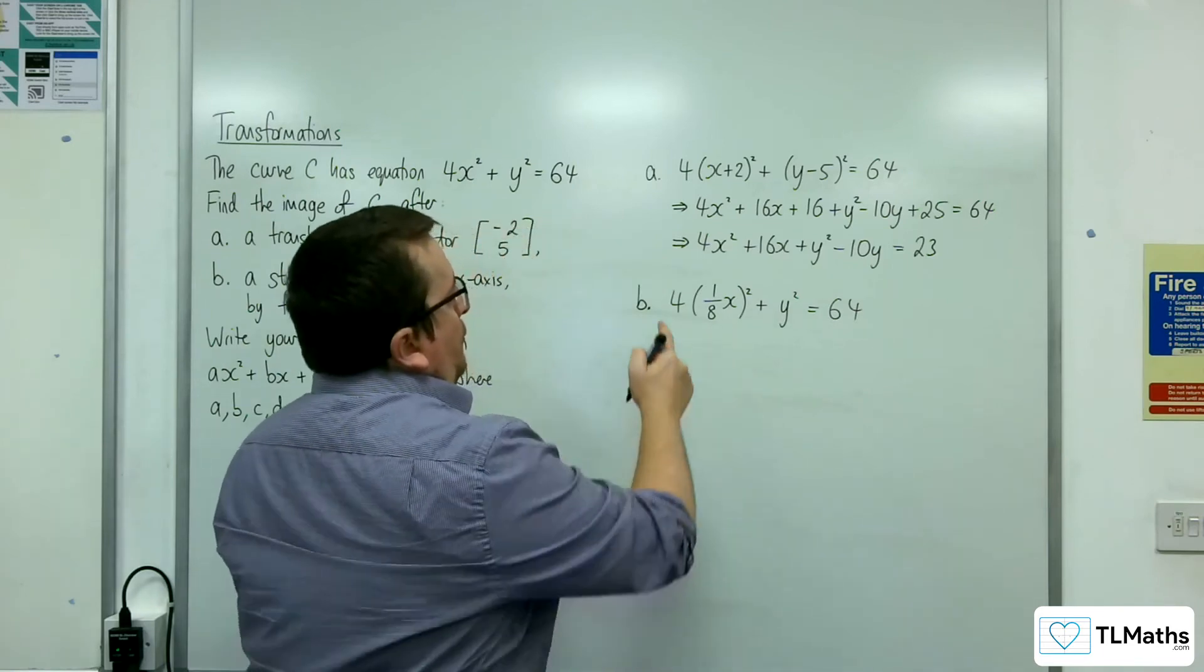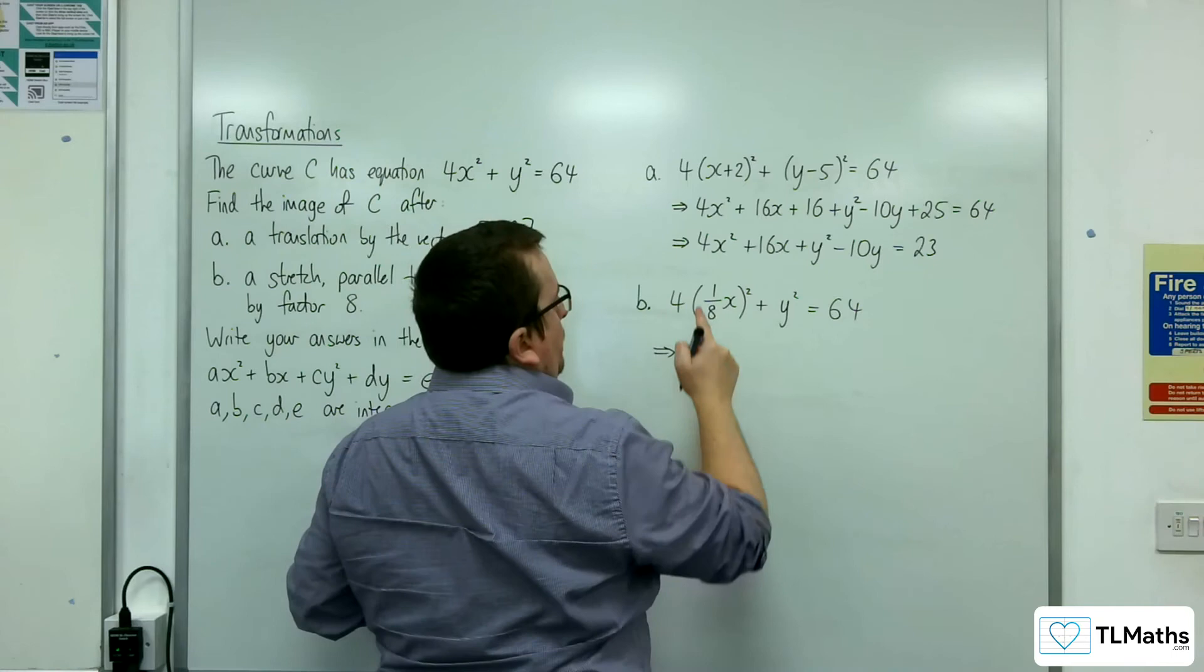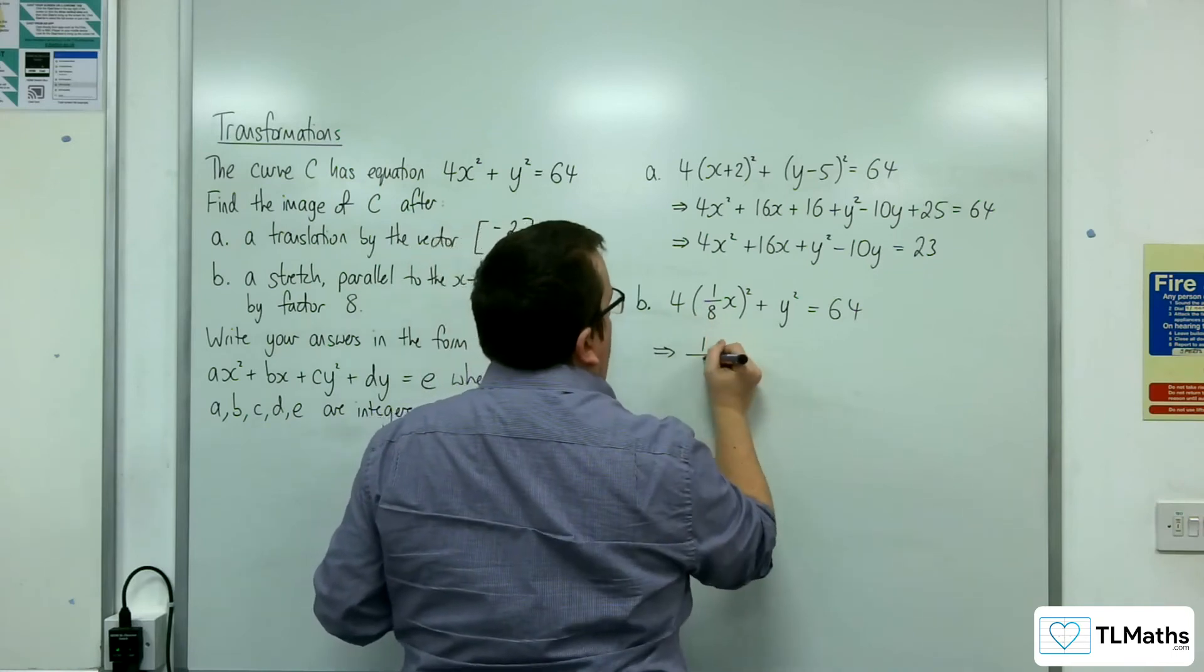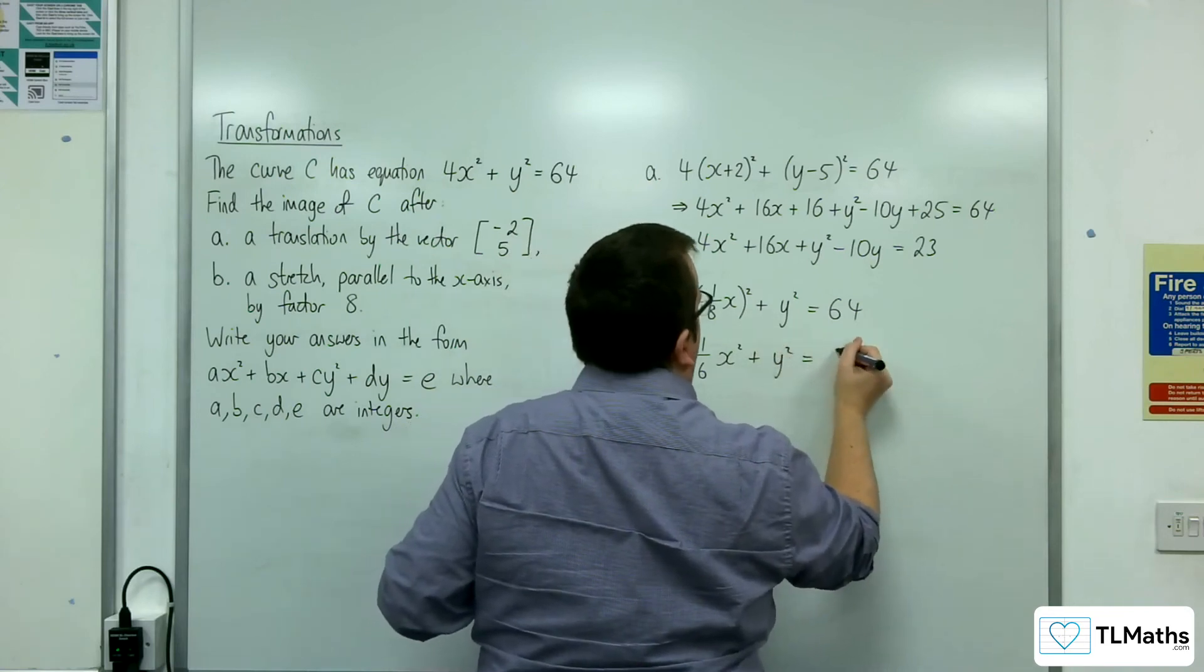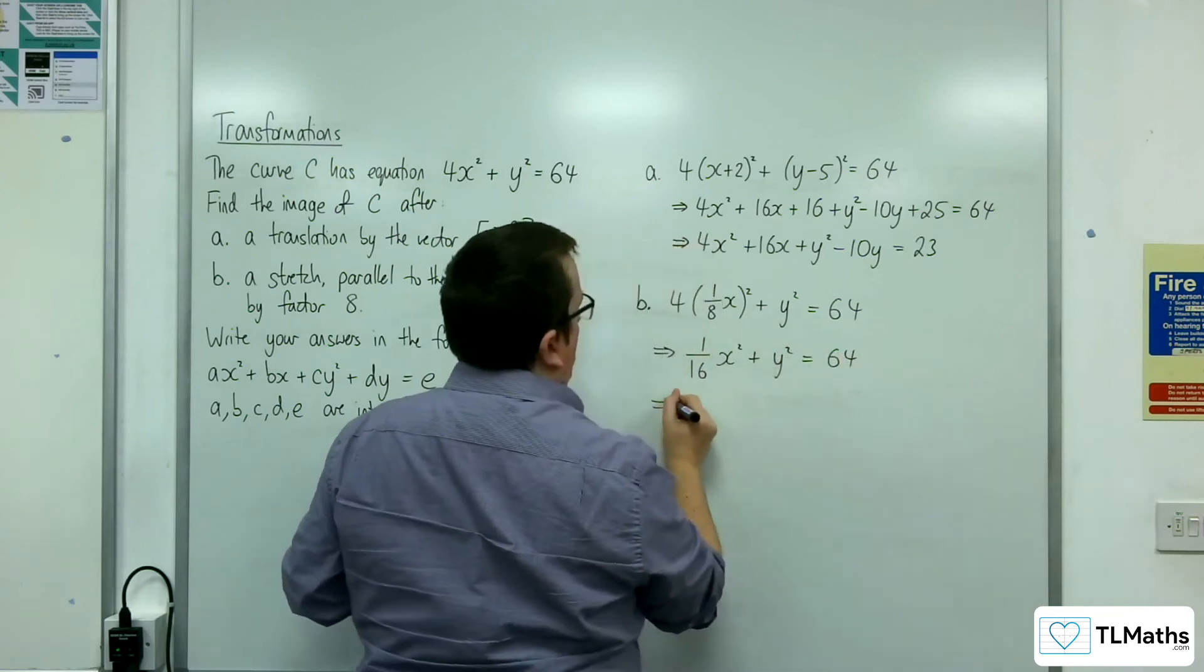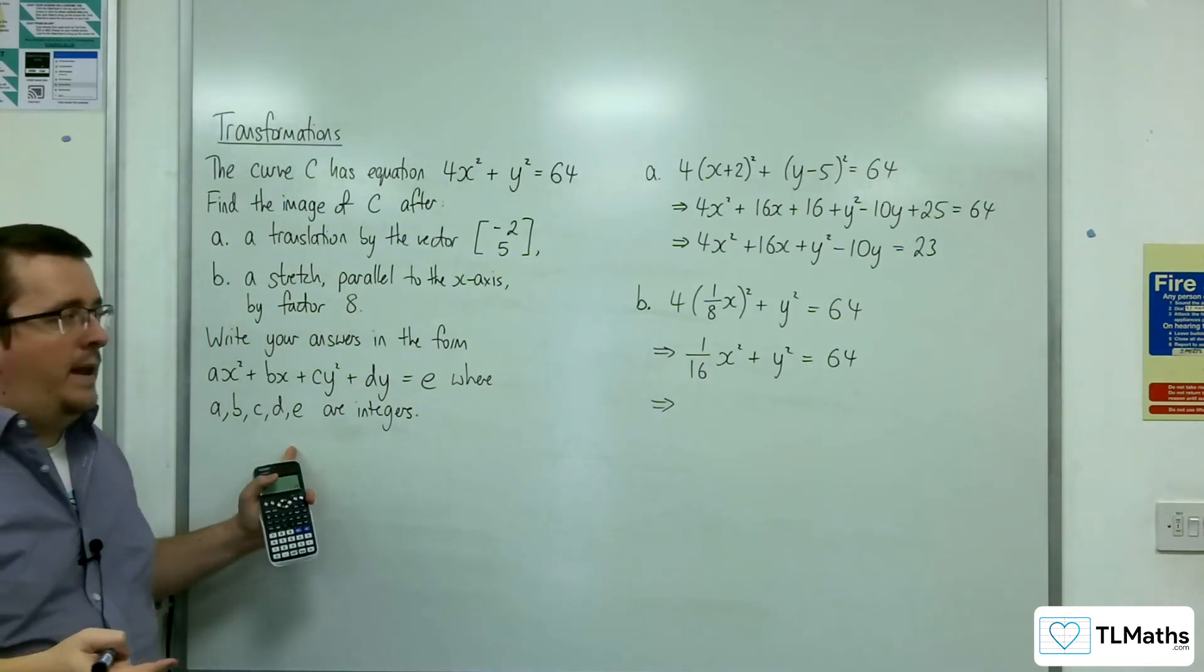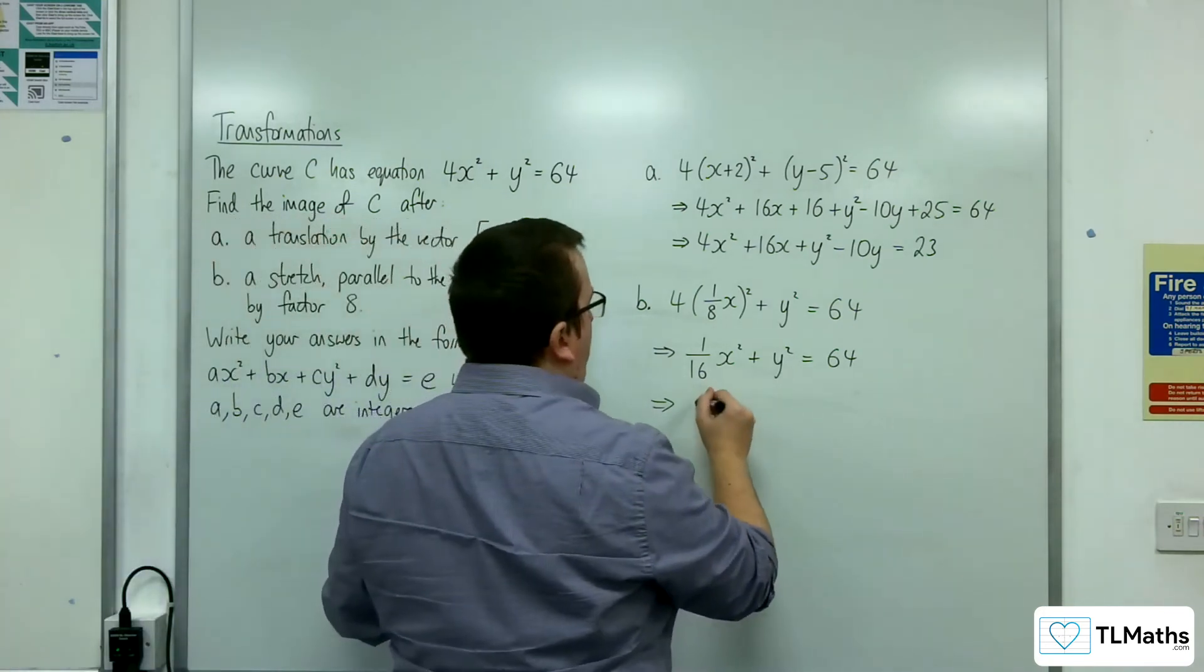So 4 lots of 1/8 squared is 4 over 64, which is 1 over 16, so 1/16 x squared plus y squared equals 64. But we need the coefficients to be integers here, so I'm going to have to multiply through by 16.